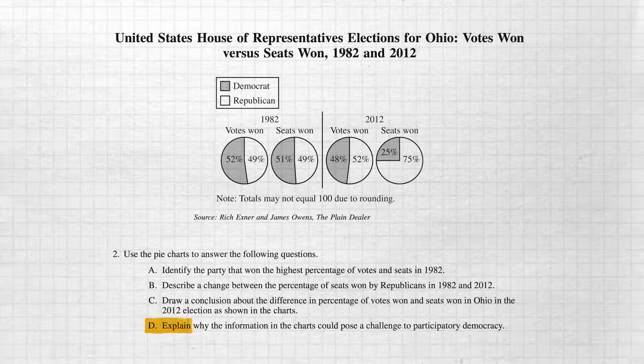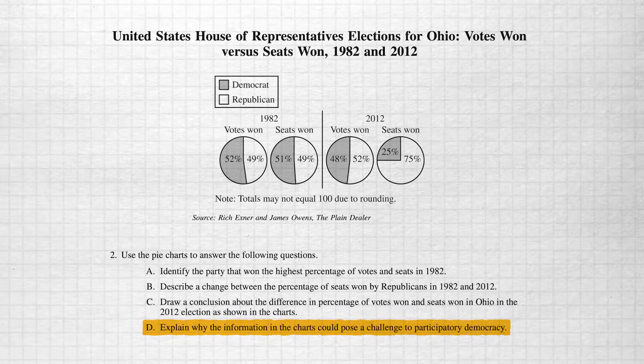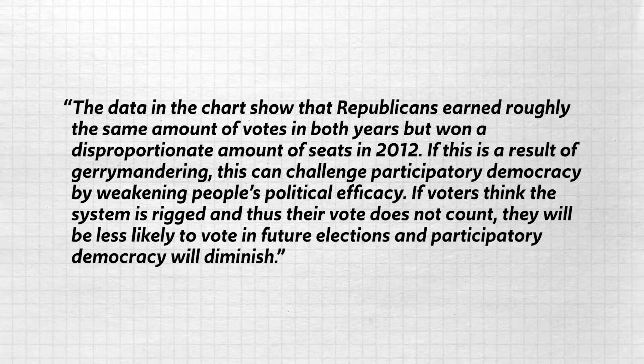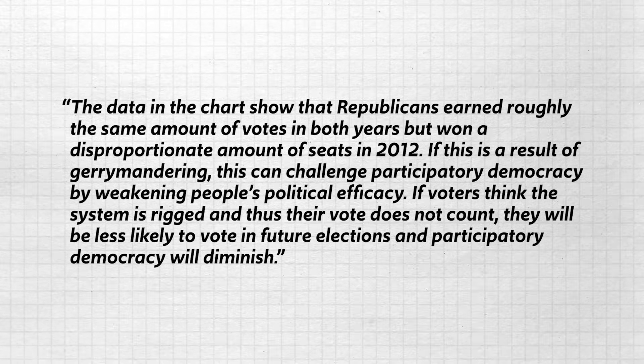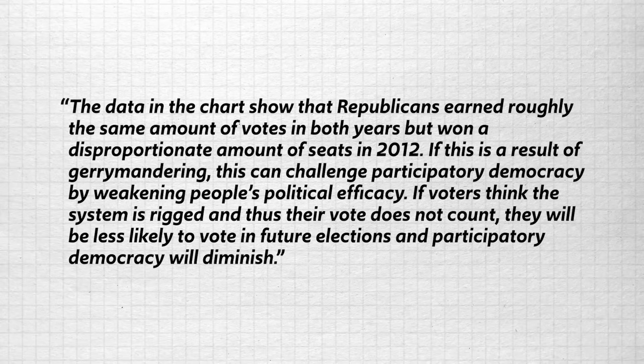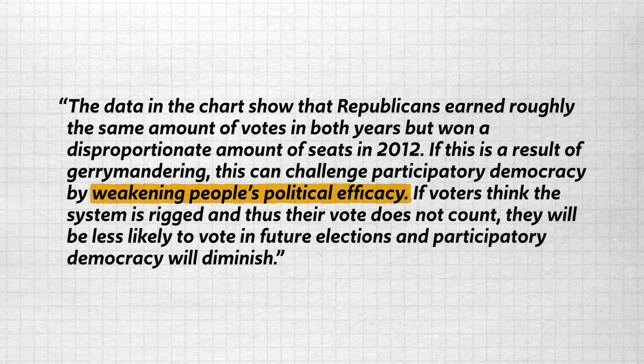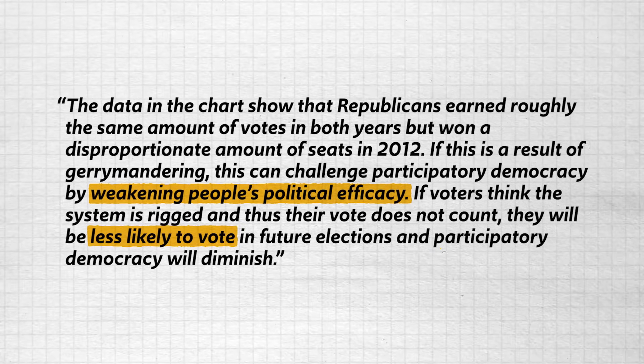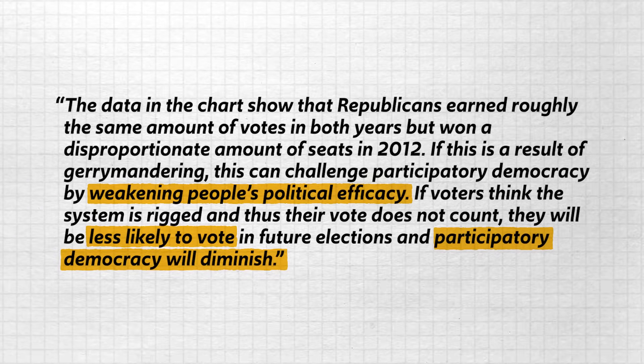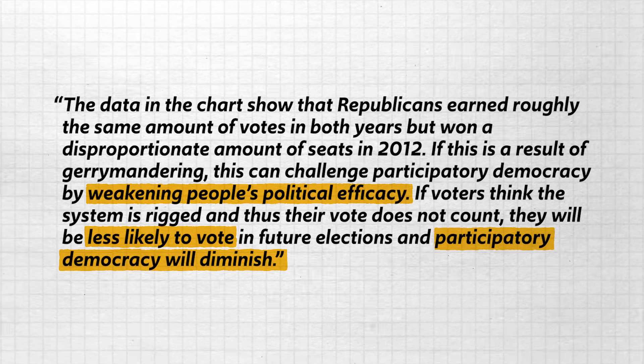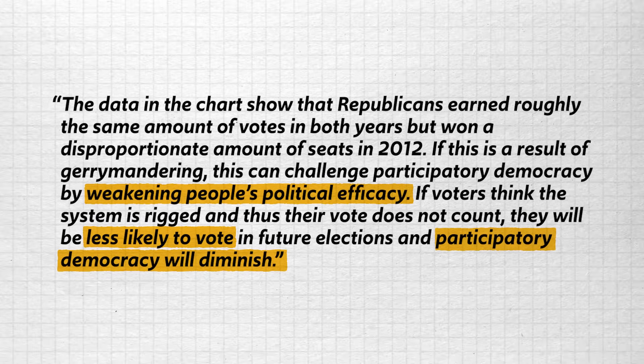Part D says: 'Explain why the information in the charts could pose a challenge to participatory democracy.' Here it really pays to know your vocabulary — they don't tell you what participatory democracy is, they just assume you know. Participatory democracy emphasizes the voice and role of ordinary citizens in the political process. So if gerrymandering occurred, how might that challenge participatory democracy? The data show that Republicans earned roughly the same amount of votes in both years but won a disproportionate amount of seats in 2012. If this is a result of gerrymandering, it can challenge participatory democracy by weakening people's political efficacy. If voters think the system is rigged and their vote does not count, they will be less likely to vote in future elections and participatory democracy will diminish. Notice: it answers the prompt by demonstrating how gerrymandering might affect participatory democracy, and it ties the answer back to the prompt.